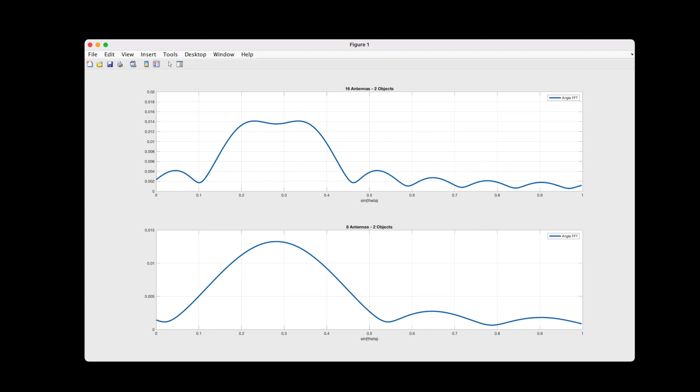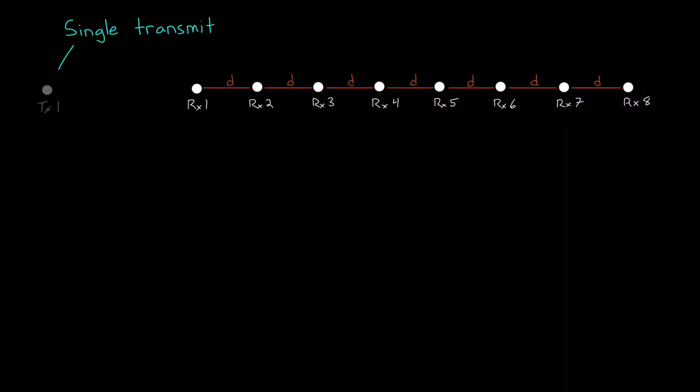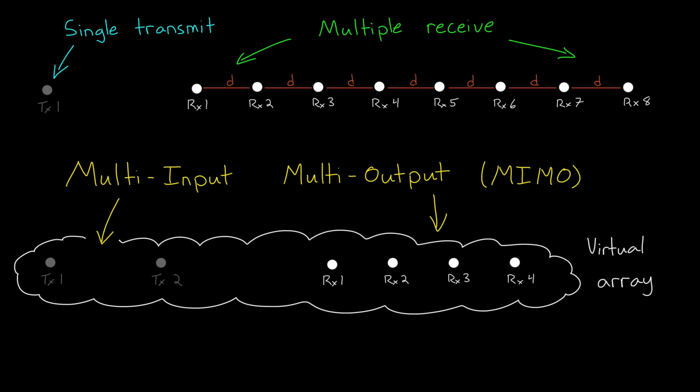But there is something that we can do about this. What we've talked about so far is a radar system with a single transmit antenna and multiple receive antennas. But there's a concept called MIMO radar, or multi-input, multi-output. With MIMO, we can have a system with multiple transmit antennas and multiple receive antennas. Hence the name. And there's a very clear benefit to moving to a MIMO radar, and that's because you can form a virtual array. With a virtual array, you can get the resolution benefit of having more receive antennas, but with fewer overall antennas.